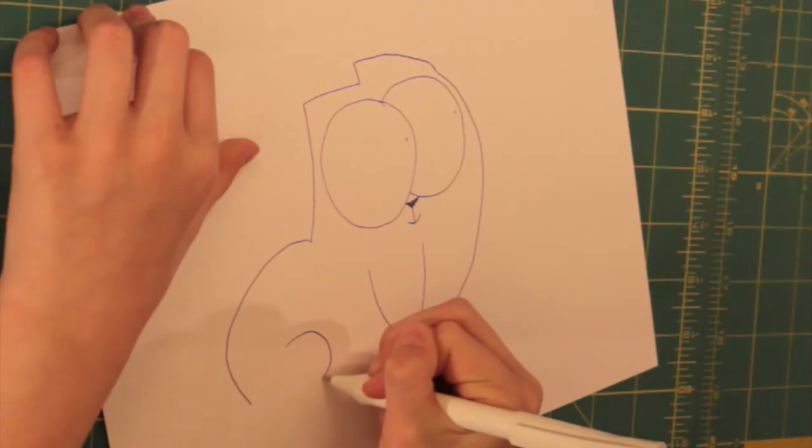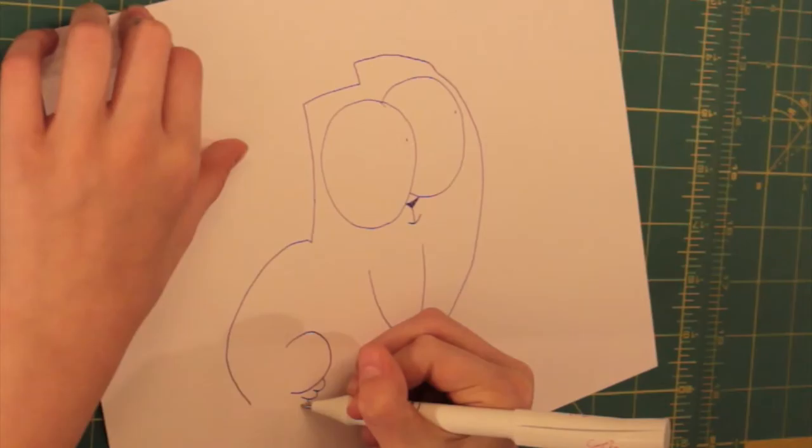And then once you're done with the paws, you draw this little back leg back here. Little paw marks.